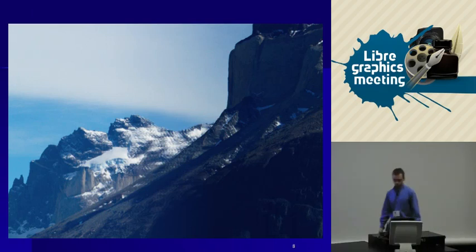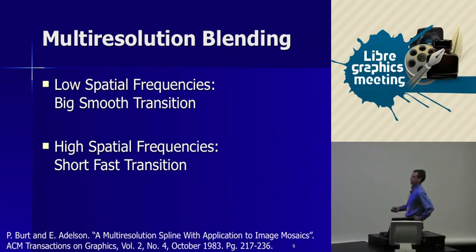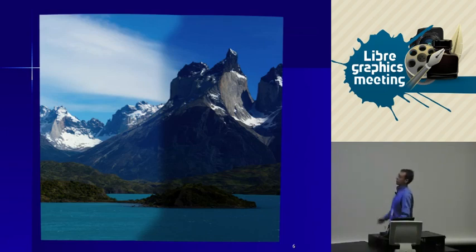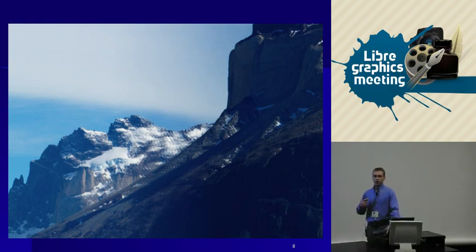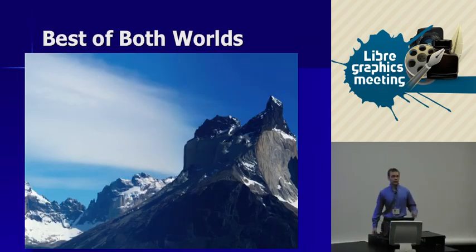The thing nblend does to fix this is a technique called multi-resolution blending, from a paper by Burt and Adelson. The major observation is that you want to use different-size transition masks based on what the image components look like. For smooth things like sky — low spatial frequency — a narrow transition would be immediately obvious to the brain. But in areas with lots of light-dark transitions between snow and rock, your eye already expects big color transitions, so a very narrow blending function is fine there.